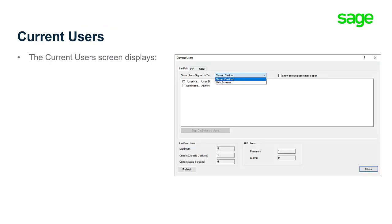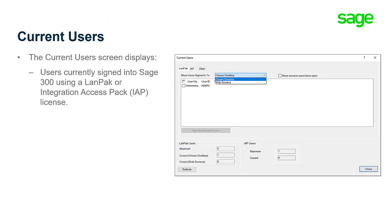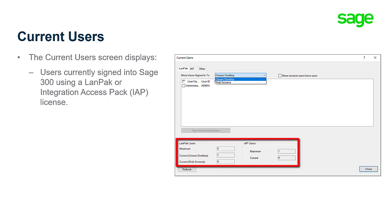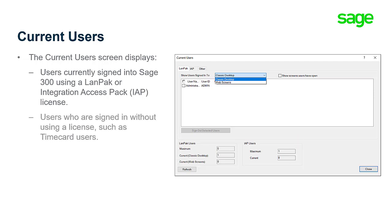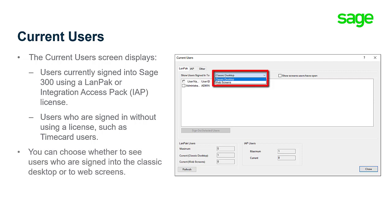The Current Users screen displays information about users currently signed into Sage 300 using a LAN Pack or Integration Access Pack license. It also displays information about users who are signed in without using a license, such as timecard users. When viewing users signed in using a LAN Pack license, you choose whether to see users who are signed into the Classic Desktop or the web screens.